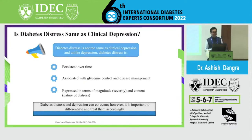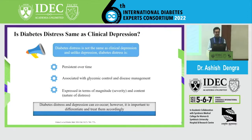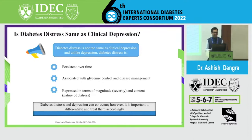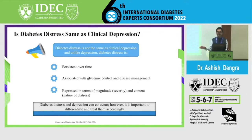Is diabetes distress the same as clinical depression? No, it is not. Unlike depression, diabetes distress is persistent over time, associated with glycemic control and disease management problems, and expressed in terms of magnitude — that is severity — and content — that is nature of distress. Diabetes distress and depression can co-occur; however, it is important to differentiate them and treat them accordingly.